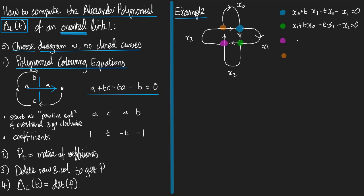At pink, the positive over crossing is x2. Then it's plus t times what happens when I go clockwise: I get x1 - tx2 again minus the final one is x3. And the orange, the positive over strand is x3, plus t times x2 - tx3, clockwise finally minus x0 = 0.